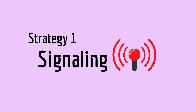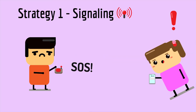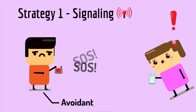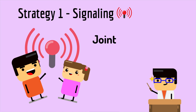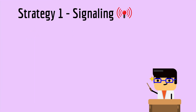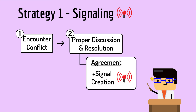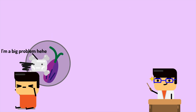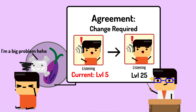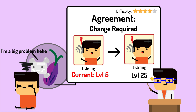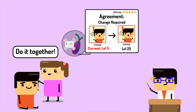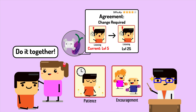Strategy 1: Signaling. One of these strategies is what I call signaling — I find myself to be more avoidant, especially when it comes to confrontations. Signaling works as a joint effort agreement reminder, meaning that after a conflict has been properly discussed and resolved, both sides agree to tackle the problem together using a signal. Resolutions don't come easy — the root of the conflict could be big and overbearing, stemming from current core levels and traits, requiring a lot of joint effort, patience, and encouragement, allowing time to nourish.